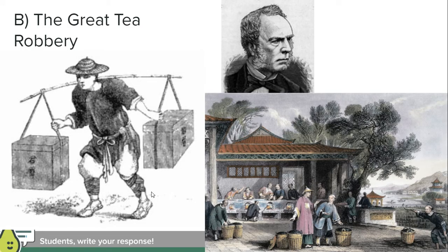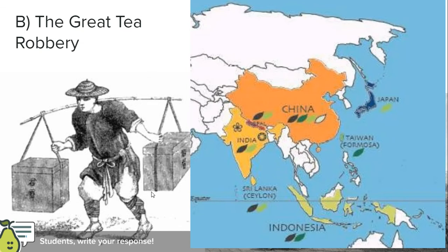Then probably one of the worst things happens: a Scotsman named Robert Fortune ended up sneaking into China and stealing the secret of tea. Tea is a plant that grows all over the place, but the specific technique for processing and drying tea to make it into the delicious beverage we know today was unique to China — a closely held secret, and a capital crime to try to steal. But Robert Fortune was able to sneak in, steal Chinese tea plants, and observe the Chinese tea production process, then introduce tea into India and Indonesia. Before long, the Chinese monopoly on tea disappeared, significantly cutting down on the value of their exports.